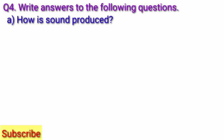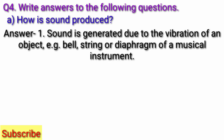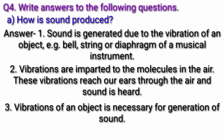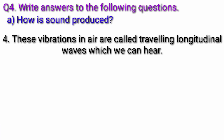Question 4: Write answers to the following questions. Question A: How is sound produced? Answer: Sound is generated due to the vibration of an object — example, bell, string, or diaphragm of a musical instrument. Vibrations are imparted to the molecules in the air. These vibrations reach our ears through the air and the sound is heard. Vibrations of an object are necessary for generation of sound. These vibrations in air are called traveling longitudinal waves which we can hear.